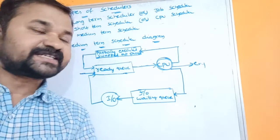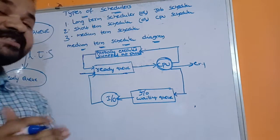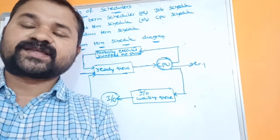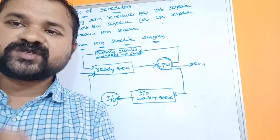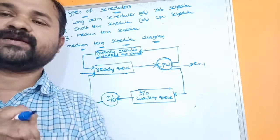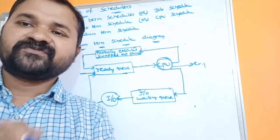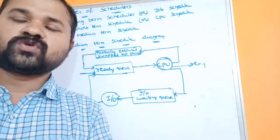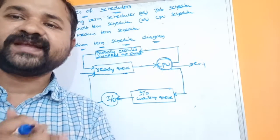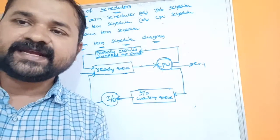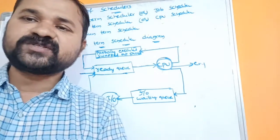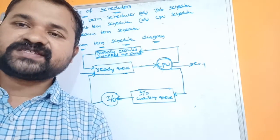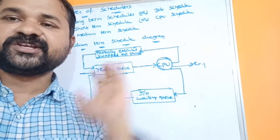In this video we are going to discuss about types of schedulers in operating systems. Scheduling decides the order in which the processes are to be executed. In a multiprogramming system we can have several processes in the main memory. When one process is waiting for some I/O operation, the CPU is idle, so CPU control will be shifted to some other process. In that way we can utilize the CPU in an effective manner with the help of scheduling.